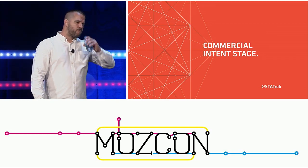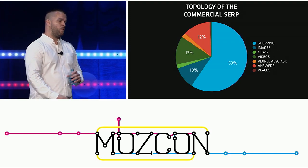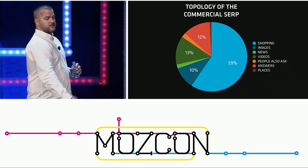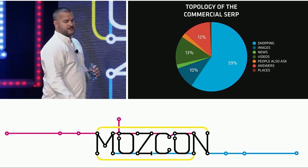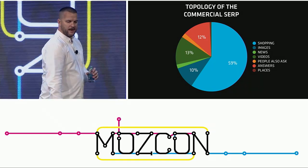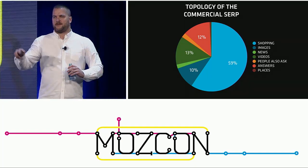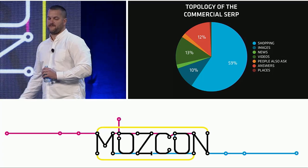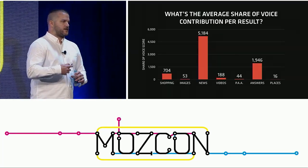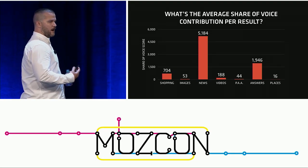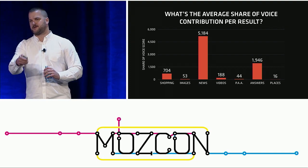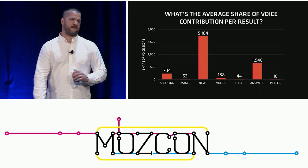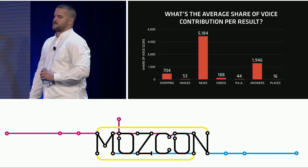Moving to the commercial intent stage — here's the topology. Shopping boxes again dominate, but we also have images, videos, and answer boxes. News boxes are about 2% here. Rather than going through every result type, I want to show a faster method using share of voice. Share of voice is a great way to measure the visibility of a result. Here is the average share of voice contribution per result type — news looks enticing, but we know better; maybe answers boxes are worth a look.